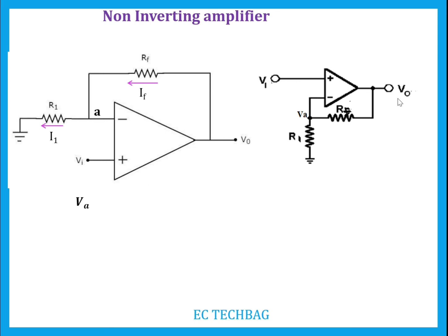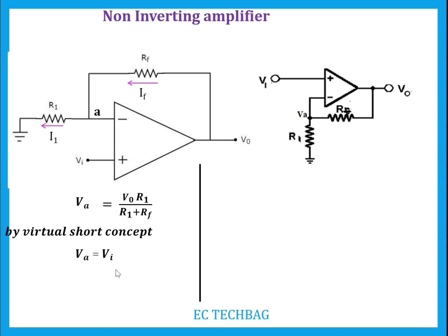You can find Va by applying the voltage division rule. Va is the voltage drop across resistor R1, so Va equals V0 multiplied by R1 divided by (R1 plus Rf). By the virtual short concept, the potential at the inverting terminal equals the potential at the non-inverting terminal, which is Vi. So Va equals Vi.